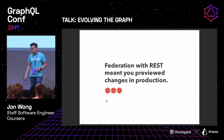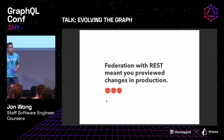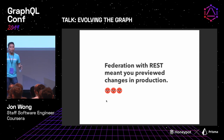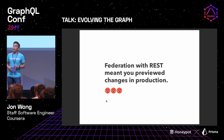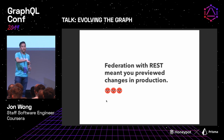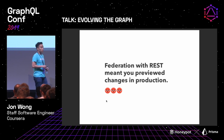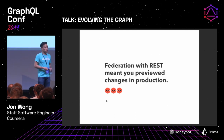With federation, the problem is that every individual piece is hard to see what it looks like in totality. When you were making a change to the GraphQL schema, you would only find out it was breaking when it got to production. And that's not good. In retrospect, that was not a great decision, and we probably should have built tooling around that.